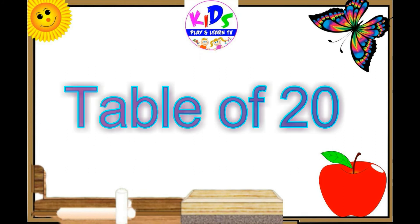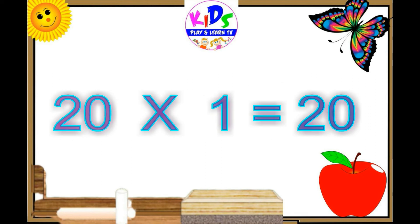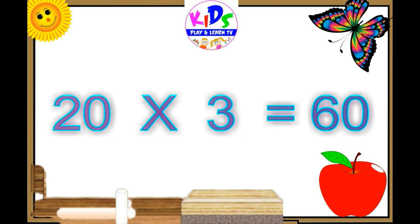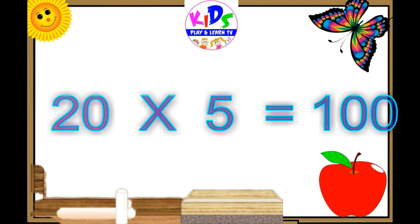Hello, let's learn the table of twenty. Twenty ones are twenty, twenty ones are twenty. Twenty twos are forty, twenty twos are forty. Twenty threes are sixty, twenty threes are sixty. Twenty fours are eighty. Twenty fives are hundred.